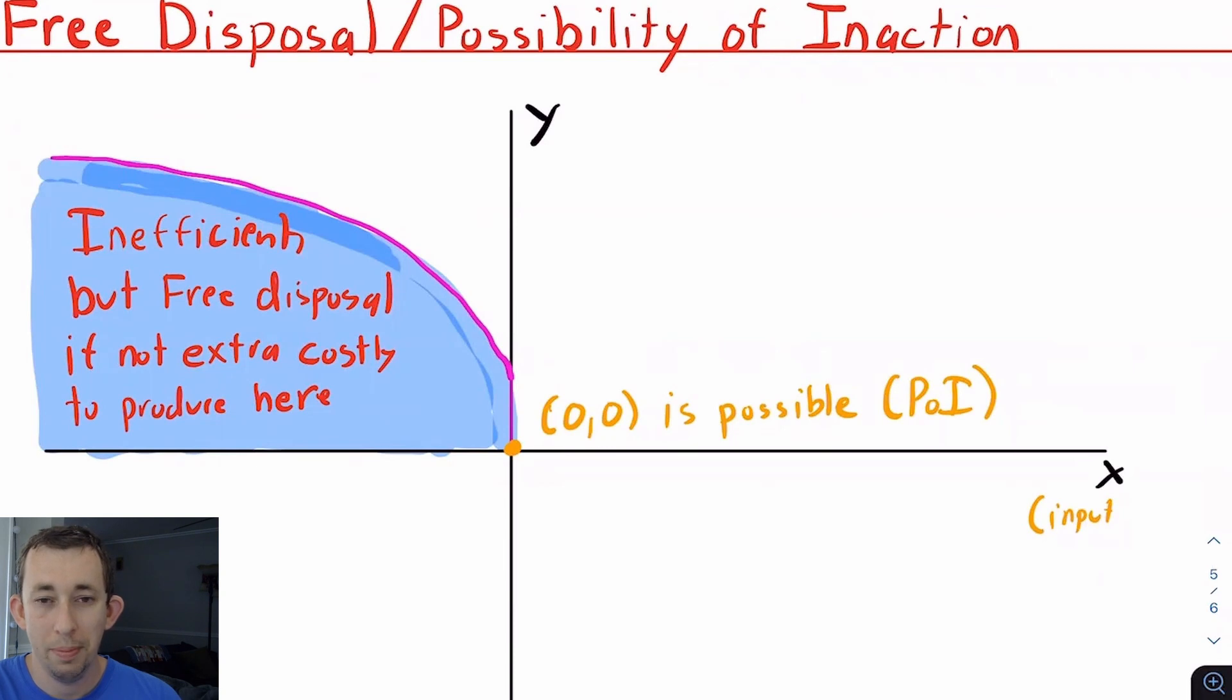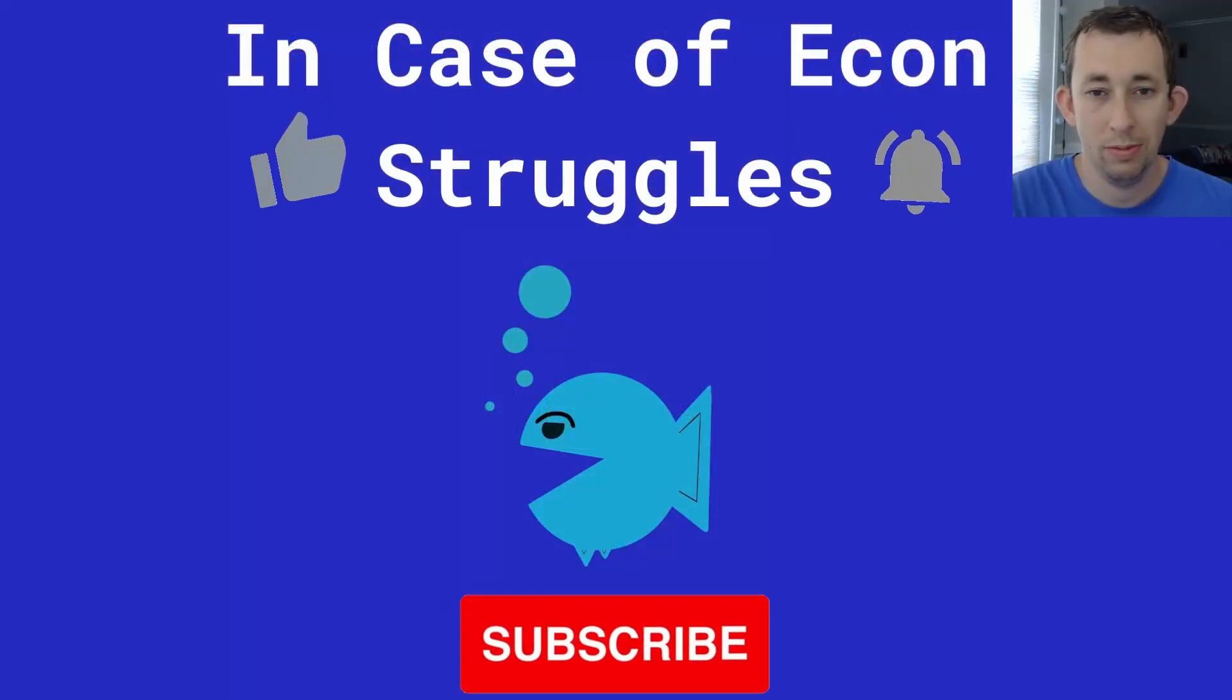So hopefully, this just gives you a better idea of the production set properties in terms of how they look graphically, as well as how to read a production set on a graph. If this was helpful, make sure to like and subscribe and we will see you next time for another case of econ struggles.